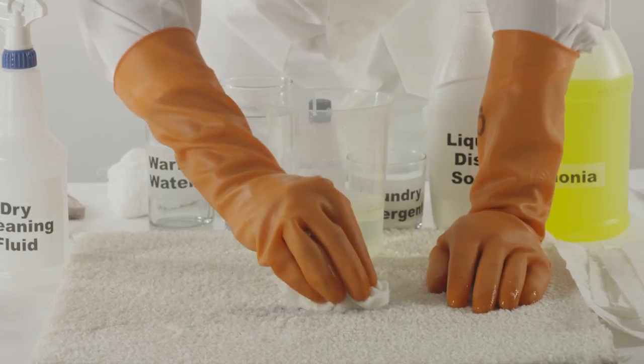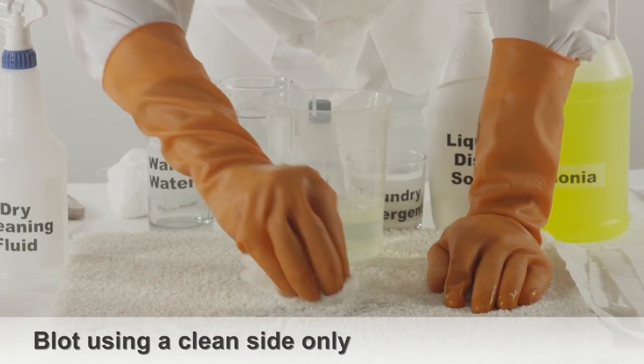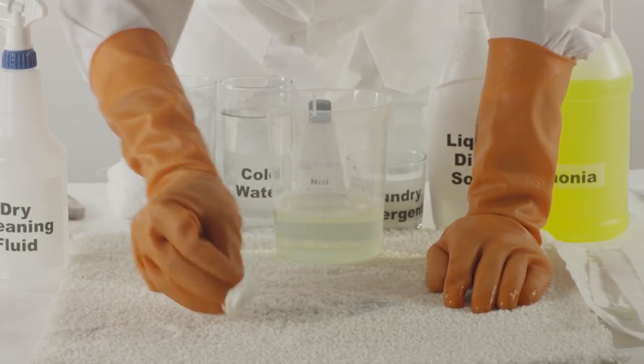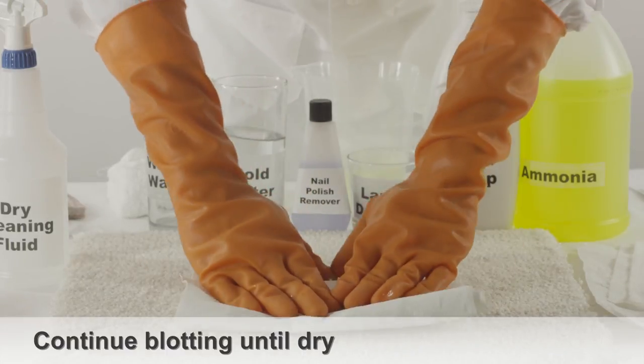Apply the solution directly onto the shoe polish stain with a paper towel. Be sure to continually use a clean side of the towel. Continue to blot the shoe polish stain, slowly absorbing the liquid. Pour cold water directly onto the stain and continue blotting until dry.